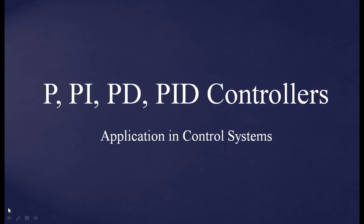Hello everyone. In this video, we are going to discuss different controllers used in the closed loop feedback system. Namely, we are going to go through P, PI, PD, and PID controllers — that is proportional controller, proportional integral controller, proportional derivative controller, and proportional integral derivative controller. These are different controllers and their applications in the control system that we will be studying in this video.